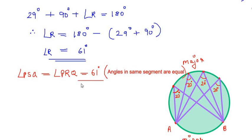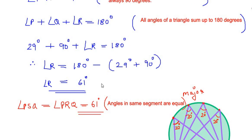So the reasoning we give is: angles in the same segment are equal. This gives the final answer: angle PSQ equals angle PRQ equals 61 degrees. If you are liking my videos, like, share and subscribe to my channel. Thank you for watching.